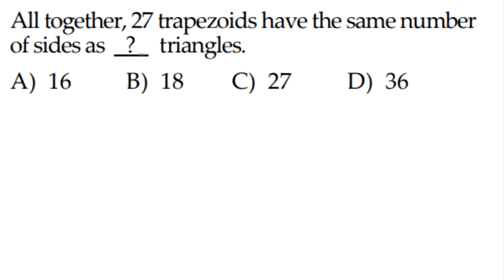Our last question is: altogether, 27 trapezoids have the same number of sides as blank triangles. So a trapezoid has four sides, and 4 times 27 is 108, and 108 divided by 3, because that's how much a triangle has, would be D, 36.